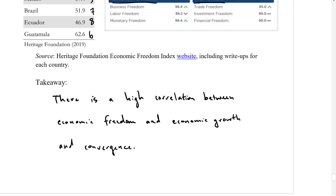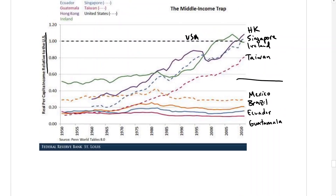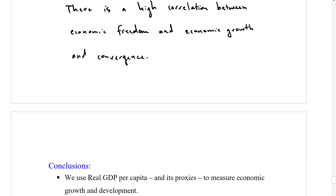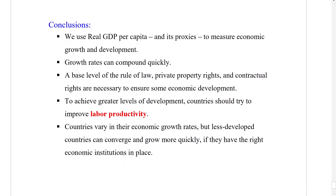And there we have it. Countries with higher levels of economic freedom, better rule of law, better judicial systems, and more open markets tend to converge better than others. That wraps up this chapter and this series of videos on economic growth. Here are a few conclusions to review: using real GDP per capita, thinking about growth rates and how quickly things double using the rule of 72, and having those baseline fundamental rights in place — rule of law, private property rights, contract rights.